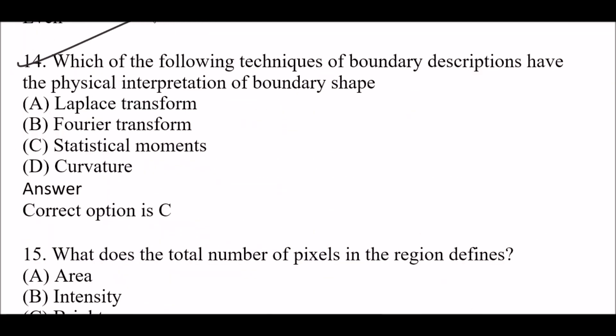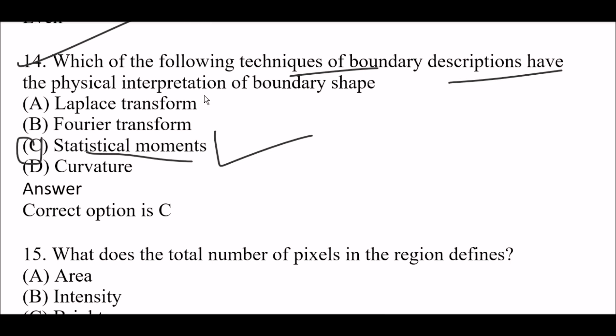Next question: Which of the following techniques of boundary description has the physical interpretation of boundary shape? Option A: Laplace transform, Option B: Fourier transform, Option C: statistical moments, Option D: curvature. The right answer is Option C, statistical moments. Statistical moments techniques of boundary description have the physical interpretation of boundary shape.